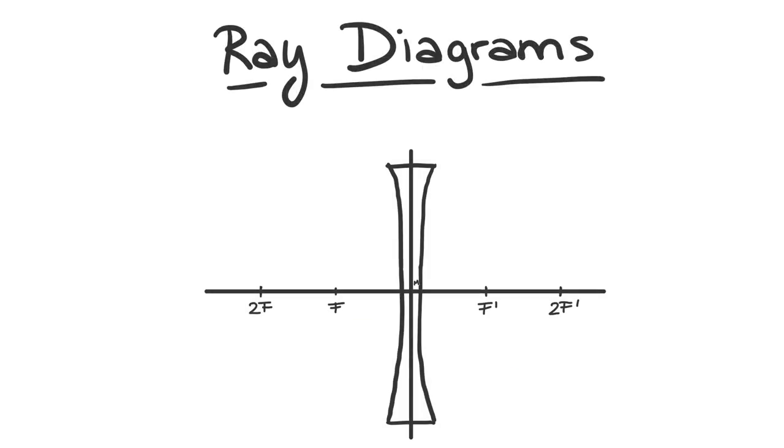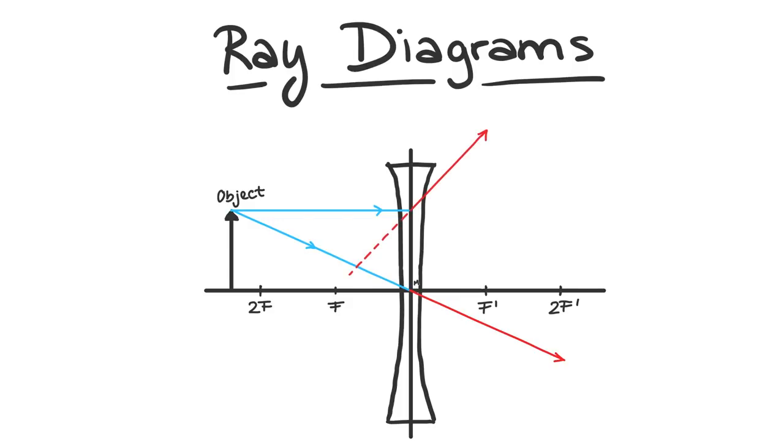So let's recall the three steps of ray diagrams. Step 1, drawing a line through the center of the lens. Step 2, drawing a parallel to the principal axis, which, after refraction, has to pass through a focal point. Step 3, drawing a line passing through the focal point, which will be refracted in a parallel line.